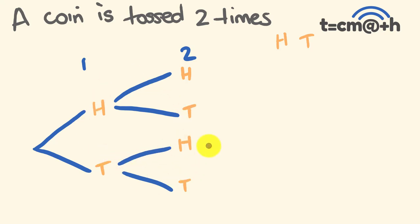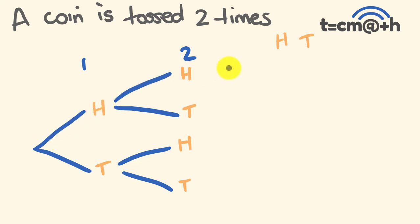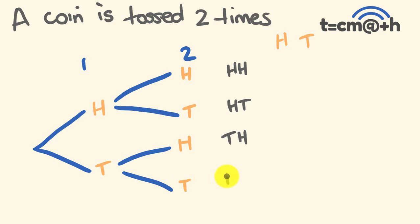Tree diagrams are a really good way of organizing your thoughts when it comes to probability. From this we're going to make a list of possible outcomes. Following along the branches: you can get a head then a head, a head then a tail, a tail then a head, or a tail then a tail.